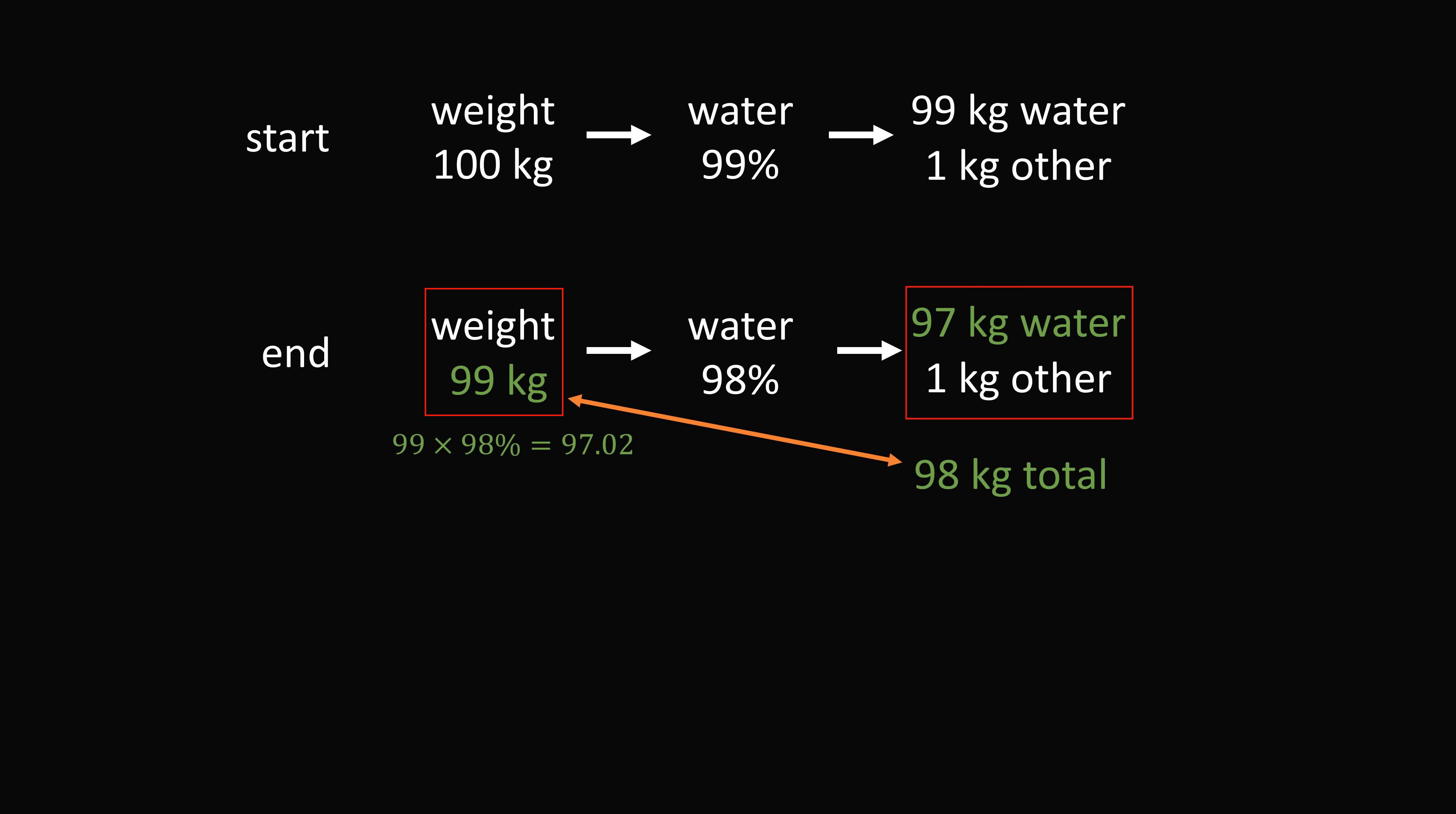So what is the correct way to solve this problem? Let's suppose the final weight is equal to the variable w. Since we have 98% weight by water, we want the water weight to be 0.98w kilograms of water. We now need the weight at the end to be equal to the weight w. So we want 0.98w plus 1 to be equal to the original weight of w. This gives the equation w is equal to 0.98w plus 1.